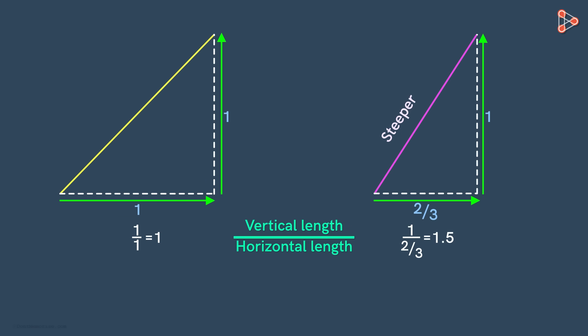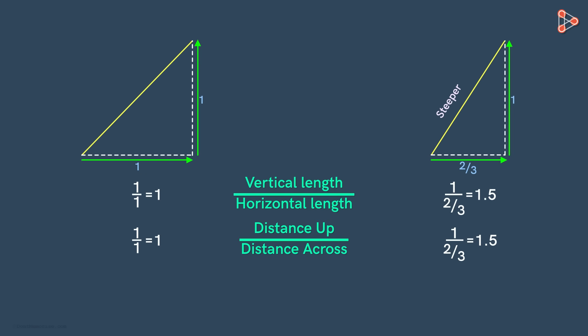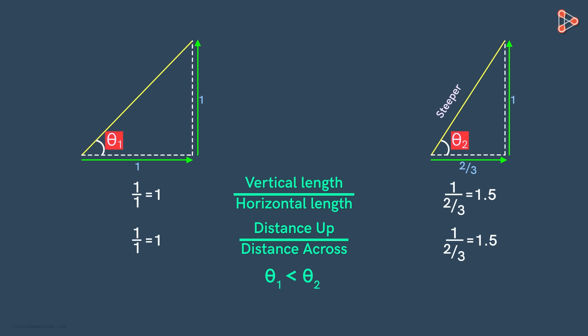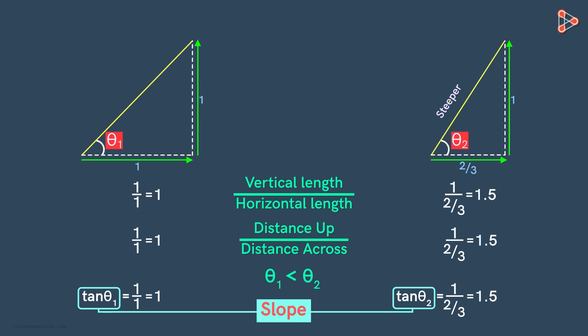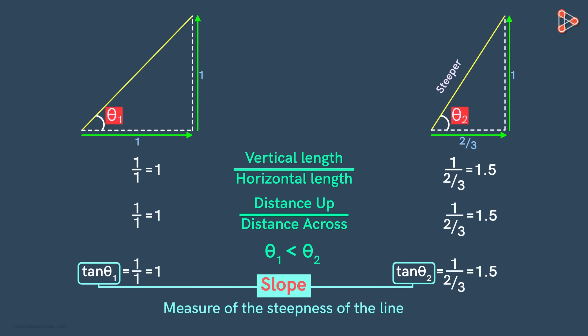We can also see this as the distance covered while going up per unit of the distance while going across. There is another way to know which line is steeper, and that is to find this angle — the greater the angle, the steeper the line. Notice that these two lines are connected to the angle by the trigonometric tangent function. This ratio is equal to tan θ₁ and the other is equal to tan θ₂. Such a ratio for a straight line is called its slope — it's the measure of the steepness of the line.